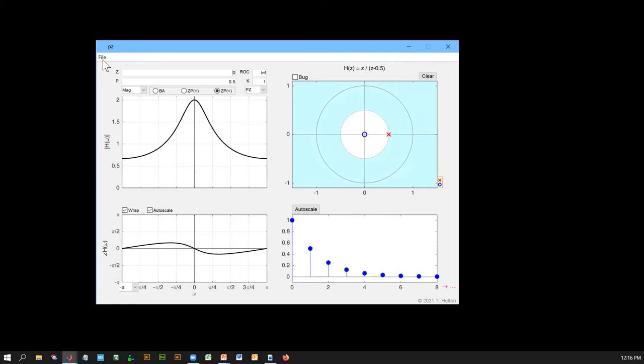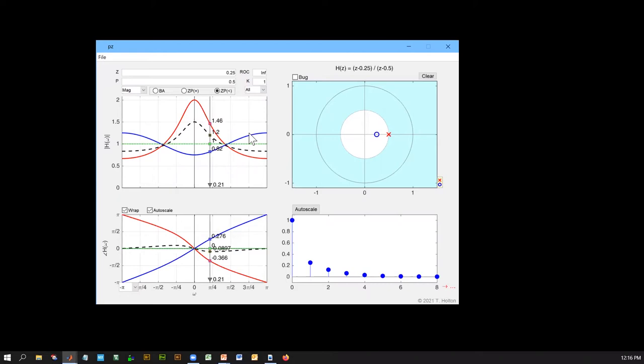And you can show, for example, the response of just the pole, the response of the zero by itself, or the response of everything. Poles in red, zeros in blue, and the net response with the black dashed line. And you can also interrogate with the cursor what the values of magnitude and phase are. So that's just an example. And there are tons of other features of this, which are described in the manual that accompanies these for instructors.